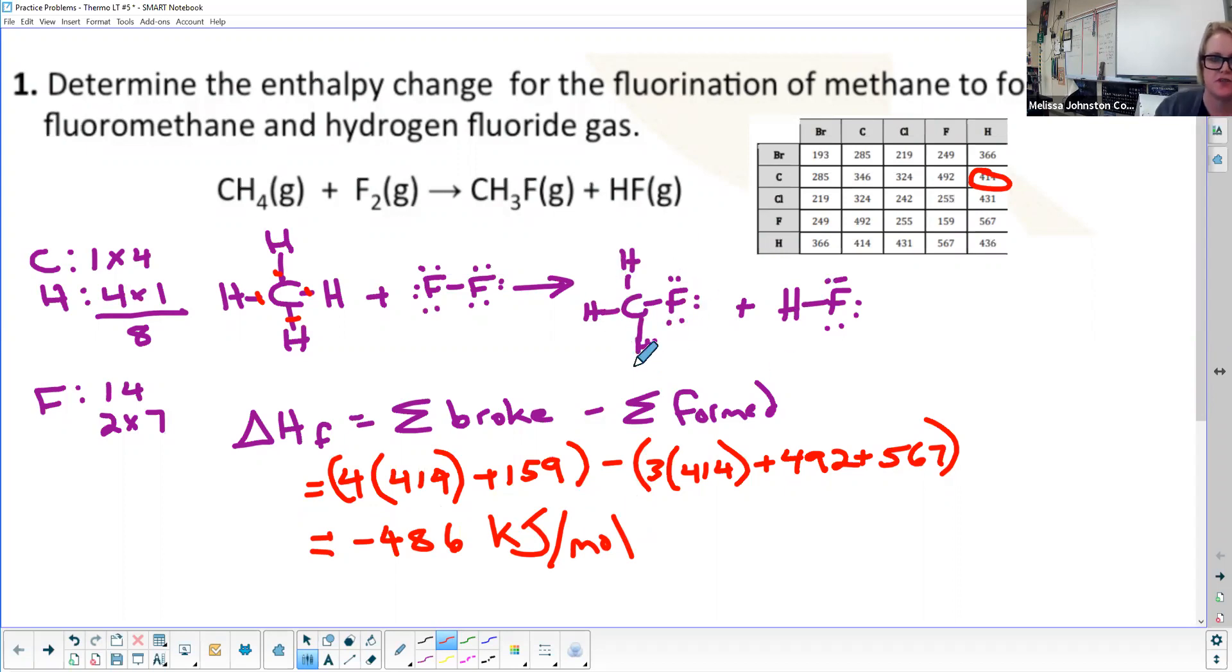It's going to release negative 486 kilojoules per mole of the CH3F and HF that are formed. One of the questions that will be asked is how certain are you about this answer. You will always say, if it's an IB question, I am uncertain because literature values tend to differ based upon the resource at which I'm getting my table. You might find another source that will get you negative 485, and that all depends on what resource you are looking at.